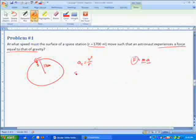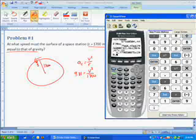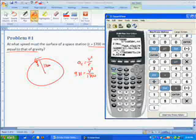So the acceleration is going to have to be 9.81. We're looking for the velocity, and we're given the radius, which is 1700. So we'll multiply by 1700, take the root, and that should give us the answer. So 9.81 times 1700, and then we'll take the square root.